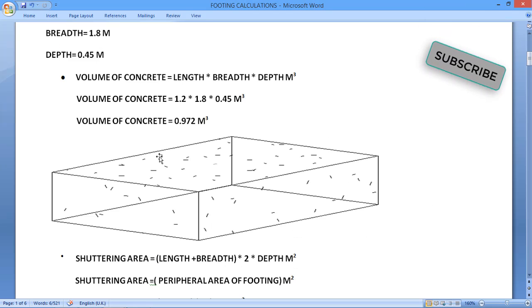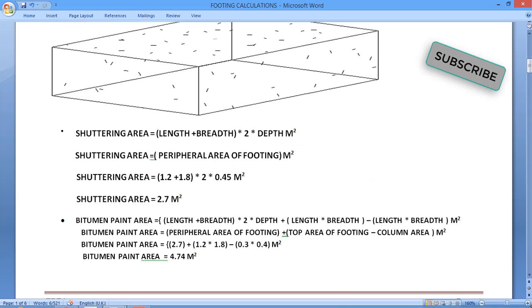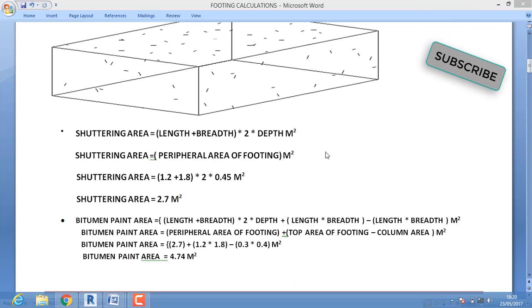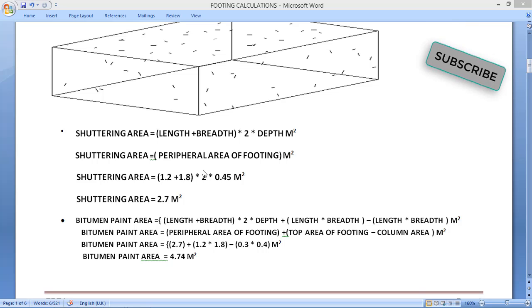Now we have calculated three things: volume of concrete which we got as 0.972 cubic meter, shuttering area 2.7 square meter, and bitumen paint area we got as 4.74 square meter.